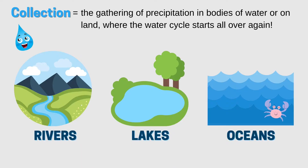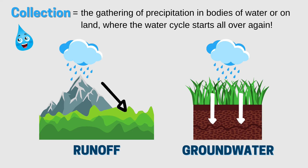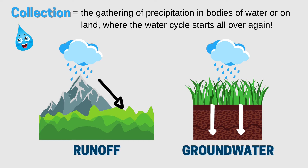The fourth and final step is collection. When water falls back down to earth as precipitation, it may fall directly into rivers, lakes, and oceans. But some of this precipitation will fall onto the land, where it will either flow downhill over the landscape as runoff, or soak into the ground to become the groundwater that flows beneath our feet. All water that is collected on earth's surface will eventually be evaporated, starting the water cycle all over again.